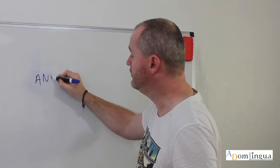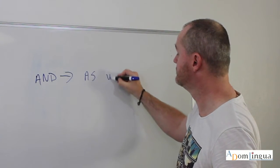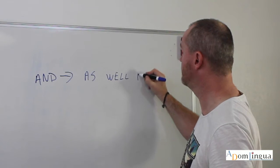The first one is AND. We use it often, and we can replace it with AS WELL AS. Pretty simple, not too complicated to remember.